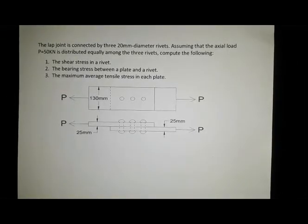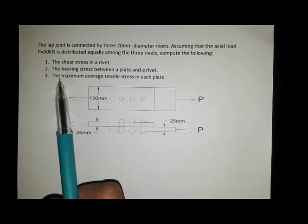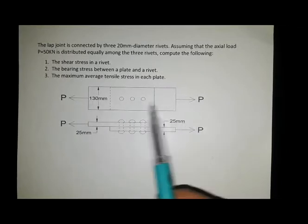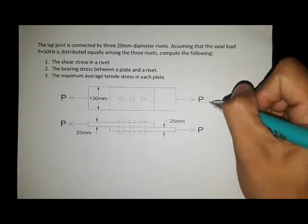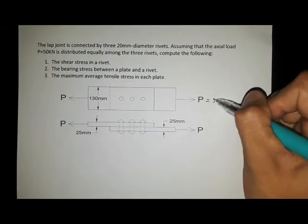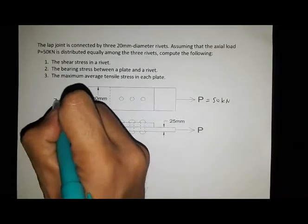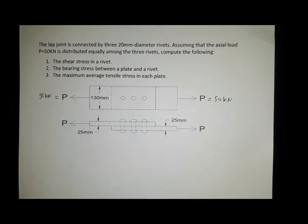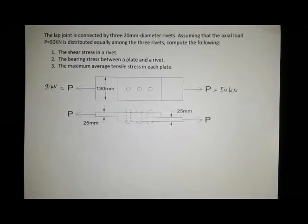The lap joint is connected by three 20 mm diameter rivets. Assuming that the actual load of 50 kilonewtons is distributed equally among the three rivets, compute: the shear stress in a rivet, the bearing stress between a plate and the rivet, and the maximum average tensile stress in each plate. We have two plates in a lap joint with a width of 130 mm, thickness of each plate is 25 mm, and P equals 50 kilonewtons.